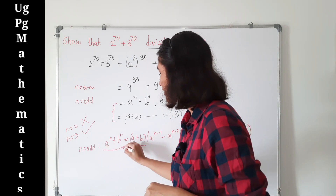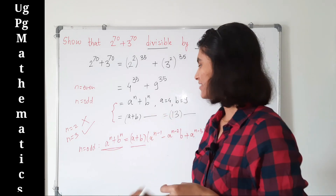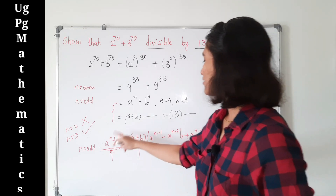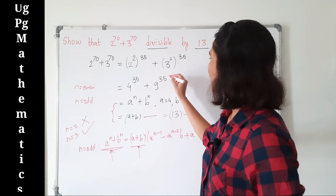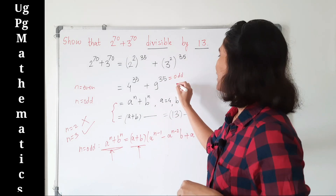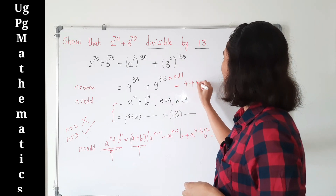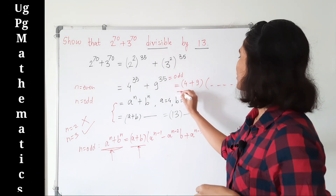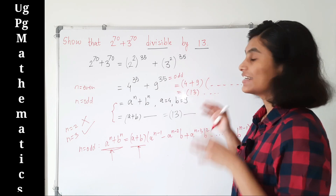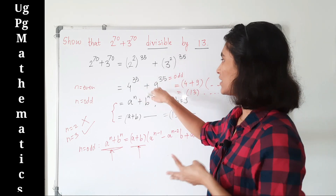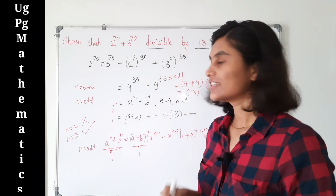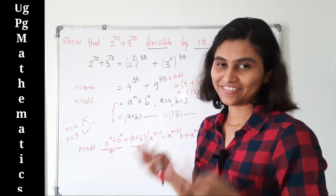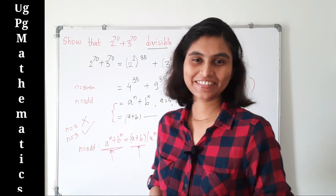So whenever n is an odd number, (a plus b) is a factor of a raised to n plus b raised to n. Now applying this here: n is 35, which is odd, so we can write 4 raised to 35 plus 9 raised to 35 as (4 plus 9) times something, which equals 13 times something. Therefore 4 raised to 35 plus 9 raised to 35 is divisible by 13, which is exactly equal to 2 raised to 70 plus 3 raised to 70 being divisible by 13. Hence the proof. I hope you find this solution interesting, thank you for watching.